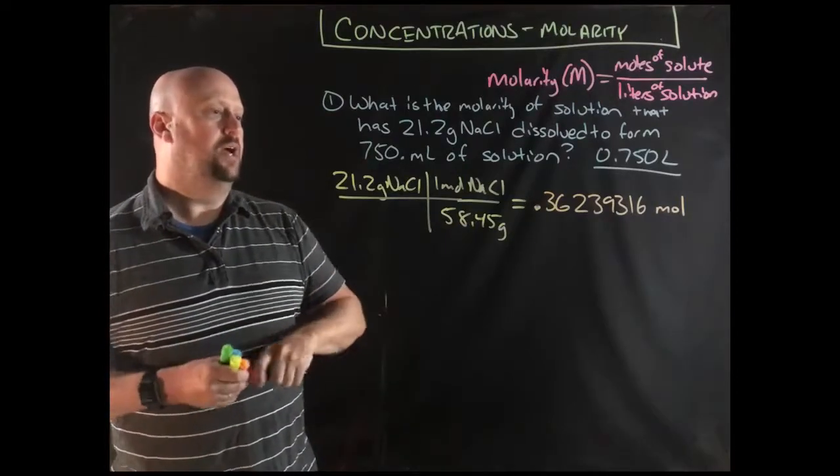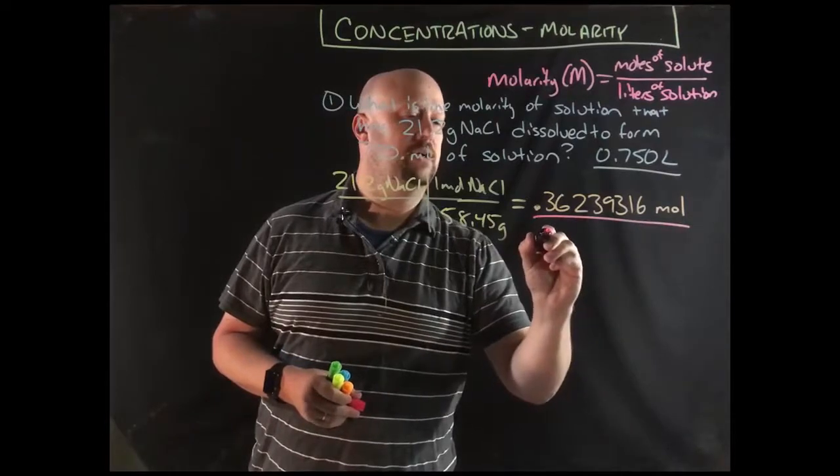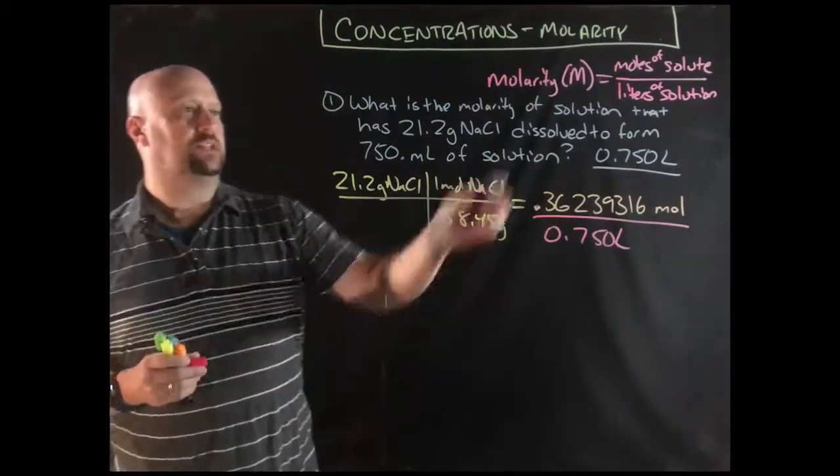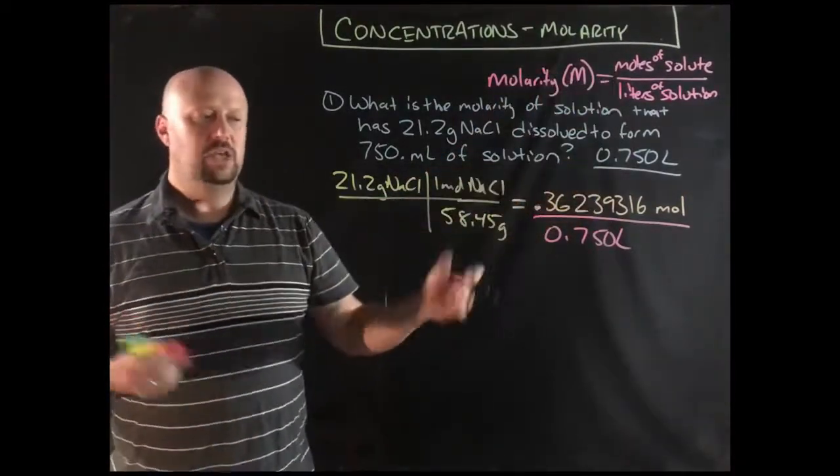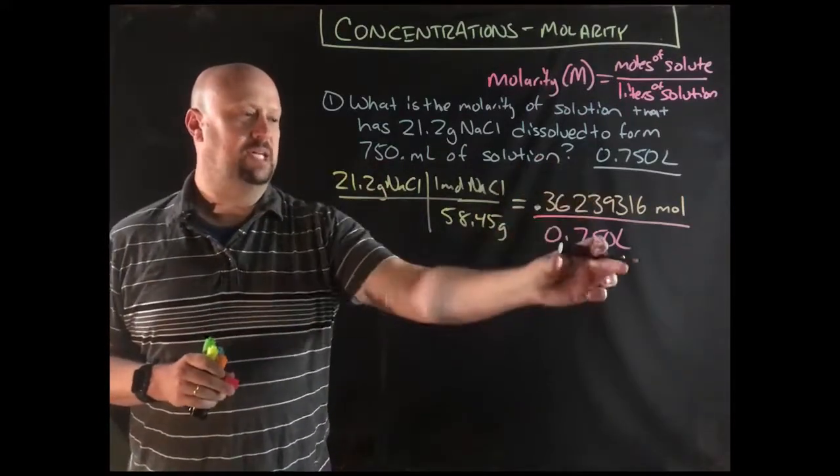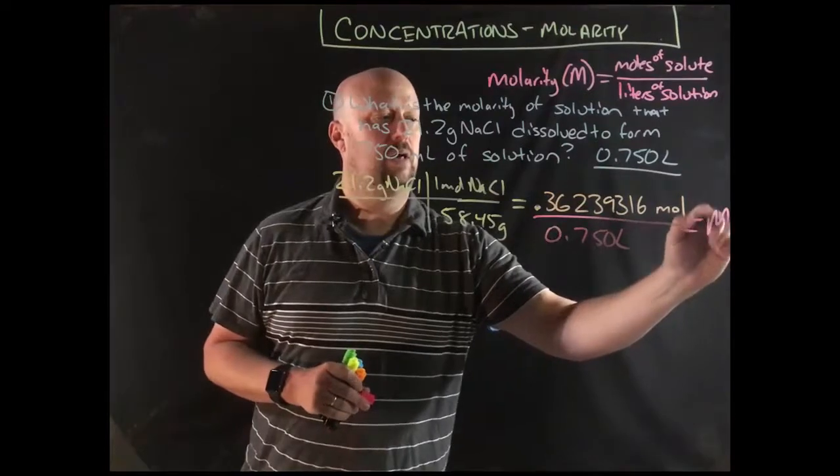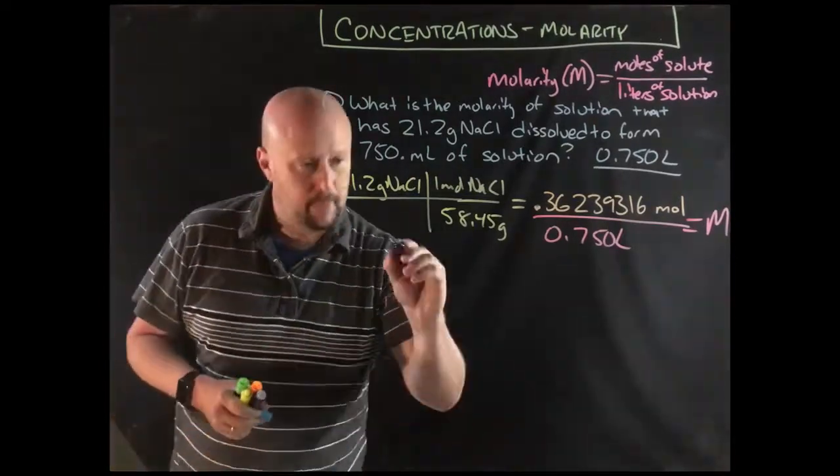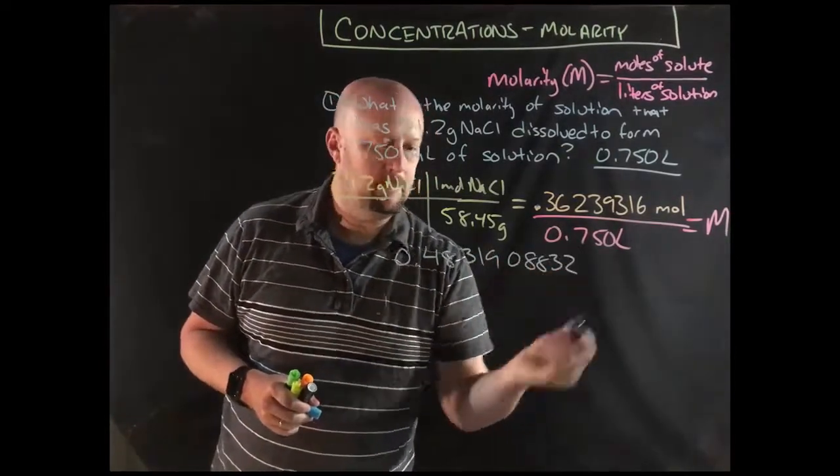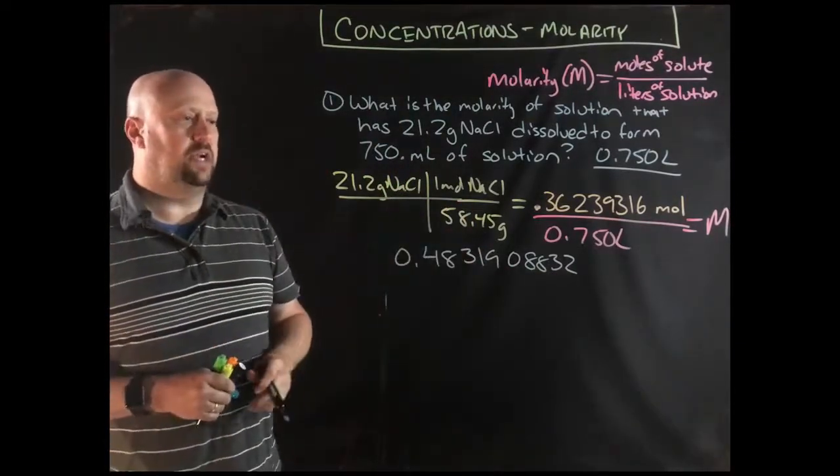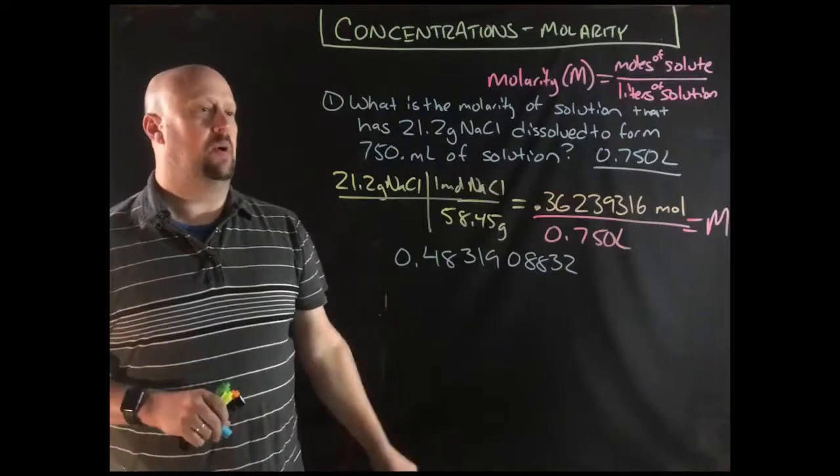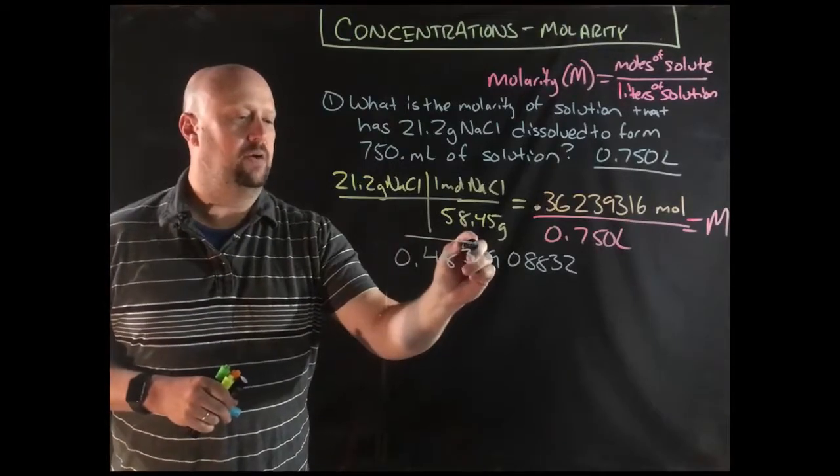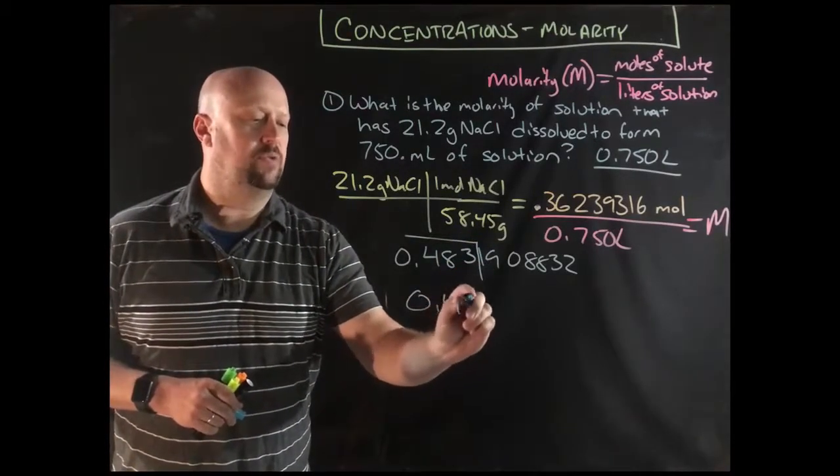Next step then is to divide this moles by our liters, so 0.750 liters. We're going to plug that in, and our answer is going to be 0.483. I do want three sig figs in this case. I've got three here and I've got three here. Both of my givens give me three sig figs.